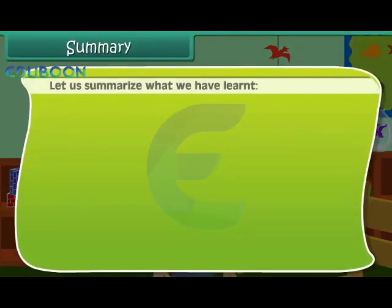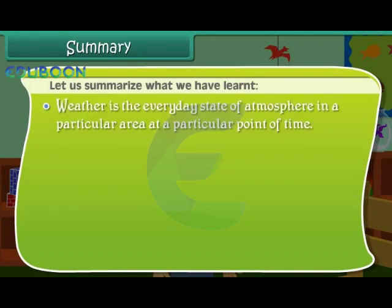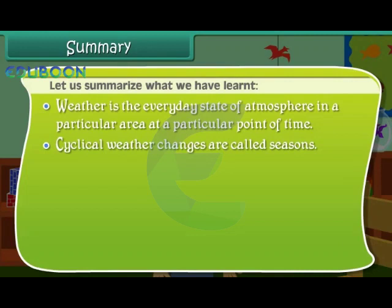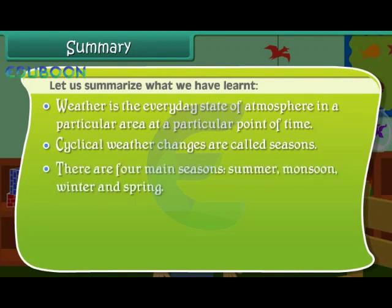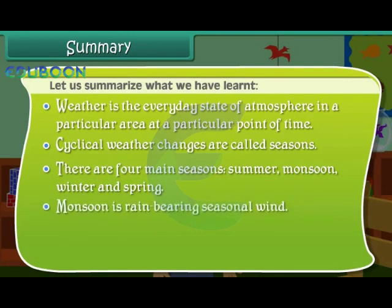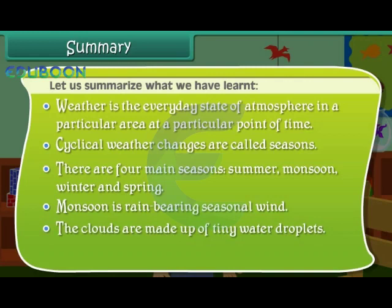Let us summarize what we have learned. Weather is the everyday state of atmosphere in a particular area at a particular point of time. Cyclical weather changes are called seasons. There are four main seasons: summer, monsoon, winter and spring. Monsoon is a rain bearing seasonal wind. The clouds are made up of tiny water droplets. Wind is moving air.